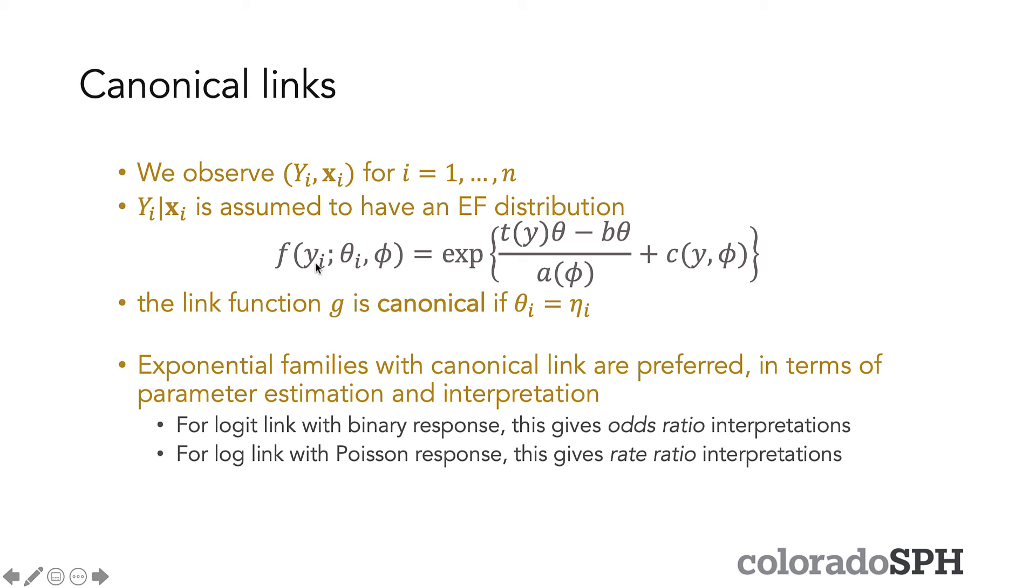And because of this, exponential families with the canonical link are preferred because it's easy to find the link. And then along with that, there are some nice properties that help you estimate your parameters as well as interpret them and do inference things like finding p-values and confidence intervals for those parameters.